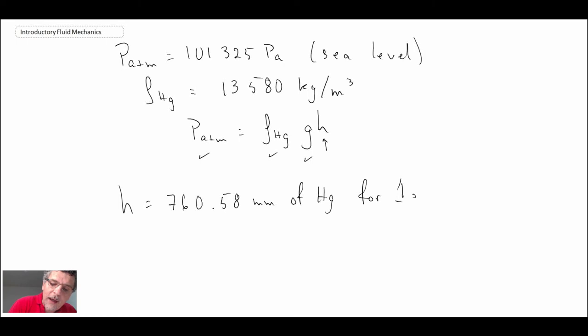So quite often you'll hear people refer to atmospheric pressure as being 101,325 pascals. You'll also hear 14.7 psia, but you might also hear them refer to it as being 760 millimeters Hg, and that's where that is coming from.